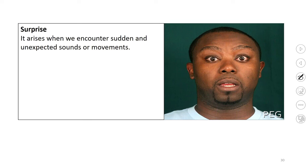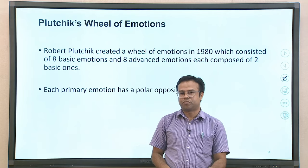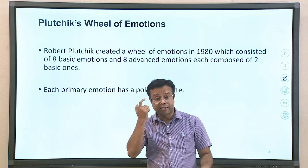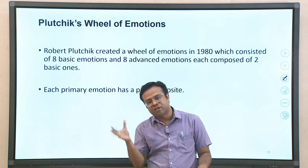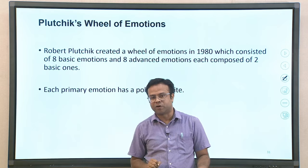Surprise arises when we encounter sudden and unexpected things around us — sounds, movements, anything unexpected. The facial expression of surprise shows eyebrows raised and pulled apart, upper eyelid raised, and jaw dropped open. Next, another theory of basic emotion is Robert Plutchik's wheel of emotion. Plutchik created a wheel of emotions in the 1980s, which consisted of eight basic emotions and eight advanced emotions, each composed of two basic emotions.